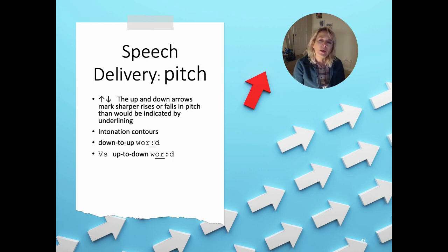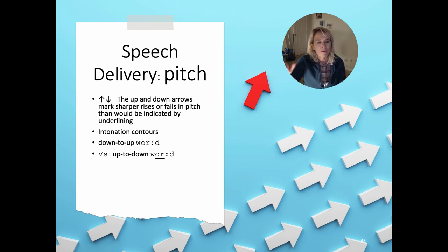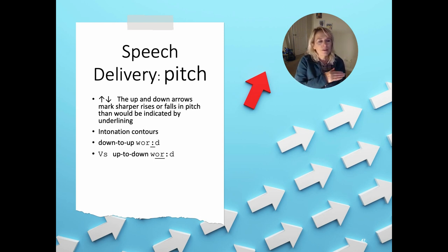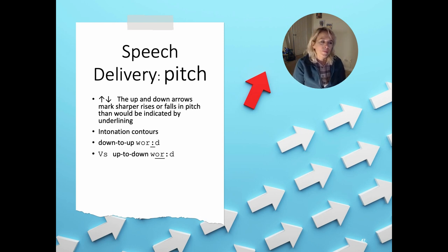When it's down-to-up, we underline the colon — because generally when you're doing contours there's a little bit of stretch involved. When it's up-to-down, you have underlining on the vowel but no underlining on the colon. That's the contour difference. One issue that a lot of people find difficult is distinguishing between a sharper pitch rise — like 'awful' — and a contour, so let's have a listen to some of these.